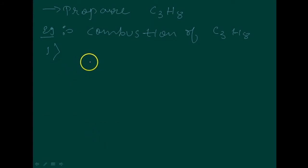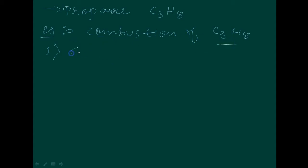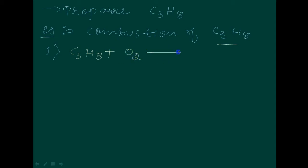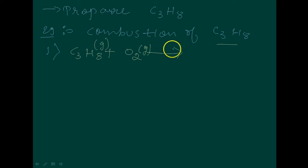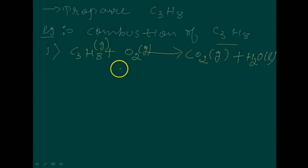Step 1: Write down the correct formula of reactants and products. Here, propane and oxygen are the reactants, and carbon dioxide and water are the products. C₃H₈ (gas) reacted with O₂ (gas) gives CO₂ (gas) and H₂O (liquid). This is Step 1 — write down the equation.